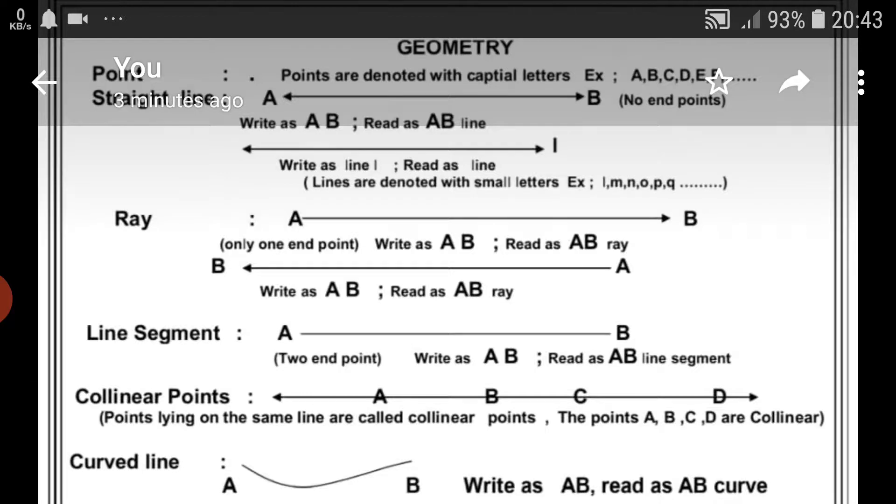Line segment. A line segment have two end points. Write as A B. Read as A B line segment.